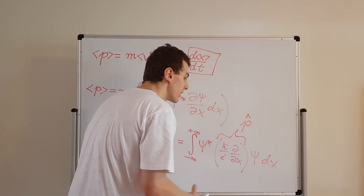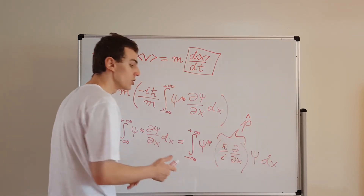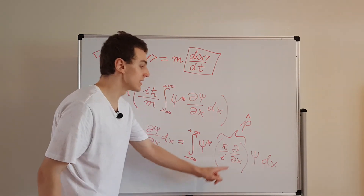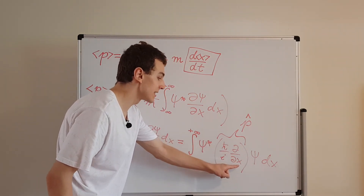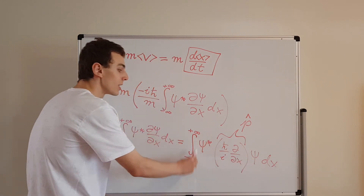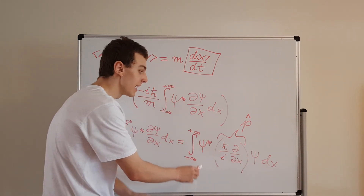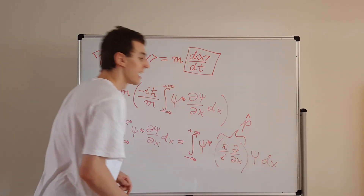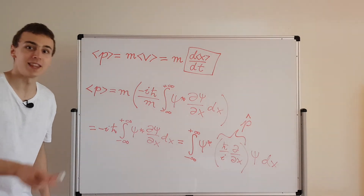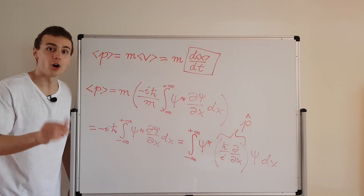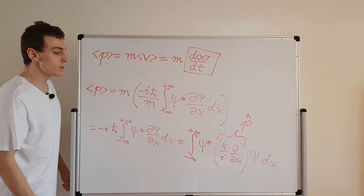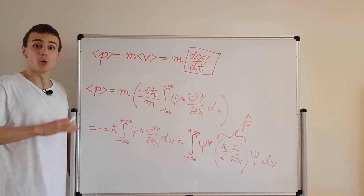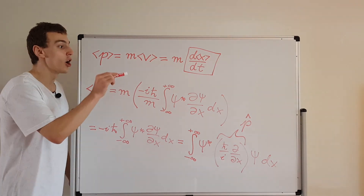This is how we can actually compute it if we know the wave function psi. All you have to do is take the partial derivative with respect to x of psi, multiply it by the complex conjugate of psi, multiply by h-bar over i, and then integrate over the entire domain with respect to x. That gives you the expectation value of momentum. We're going to keep talking about expectation values in the next few videos in this playlist.